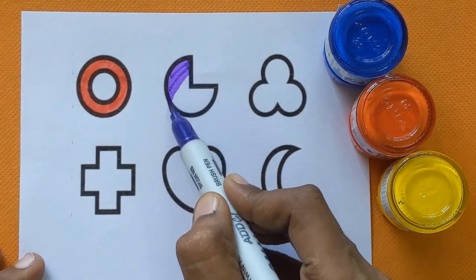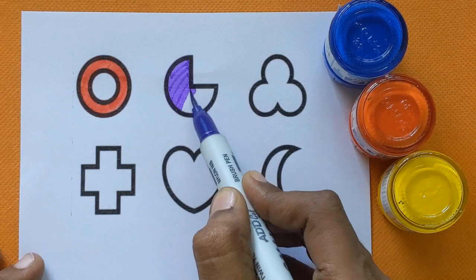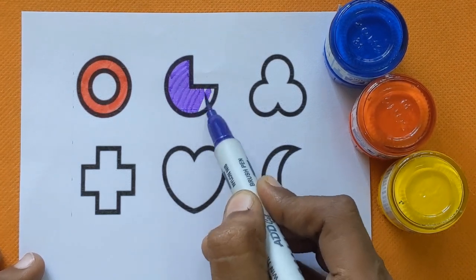Pie, which shape is this, kids? This is pie with a violet color.